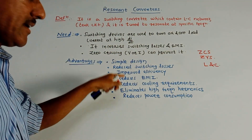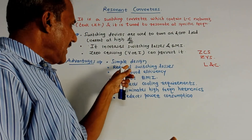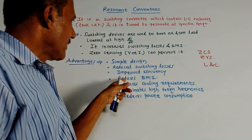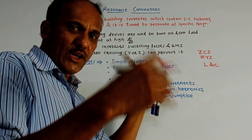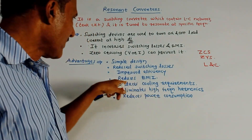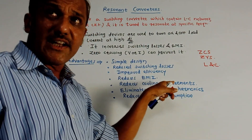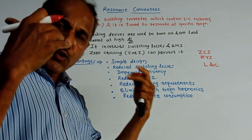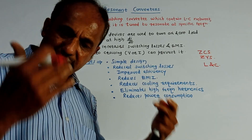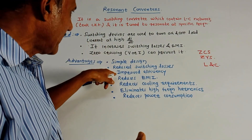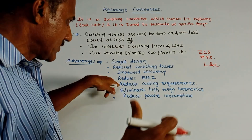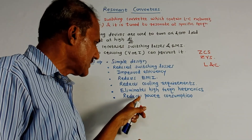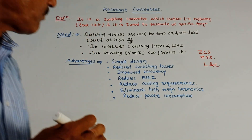What are the advantages of resonant converters? The designing becomes simple, it reduces switching losses, and efficiency is naturally improved. It reduces electromagnetic interference. It also reduces the cooling requirement — methods like natural convection, forced air cooling, forced liquid cooling, and vapor phase cooling are less needed. Finally, it eliminates high frequency harmonics and reduces power consumption.